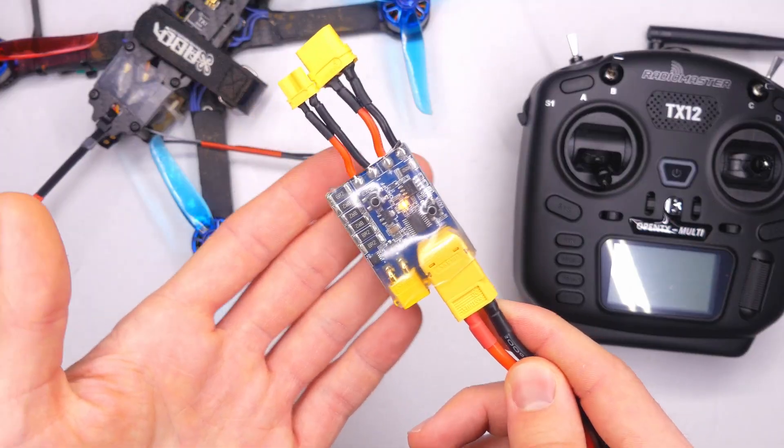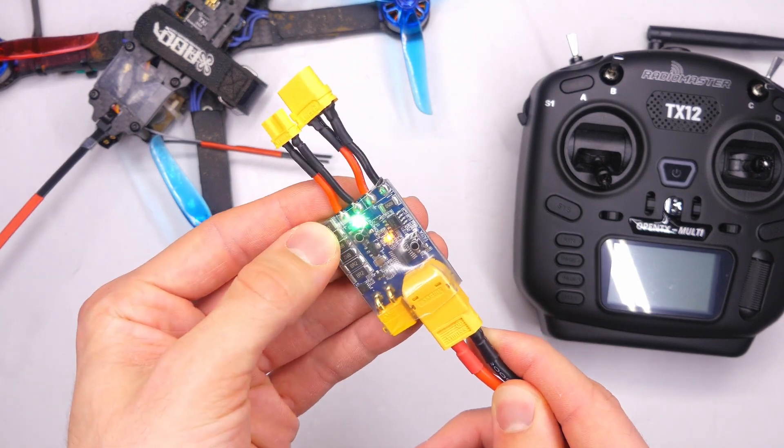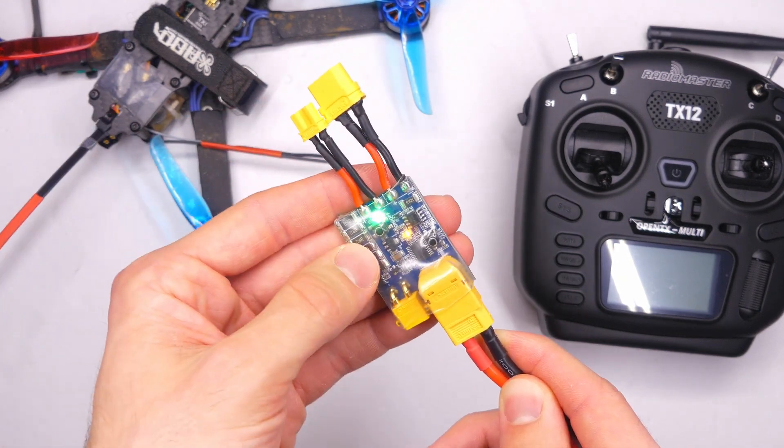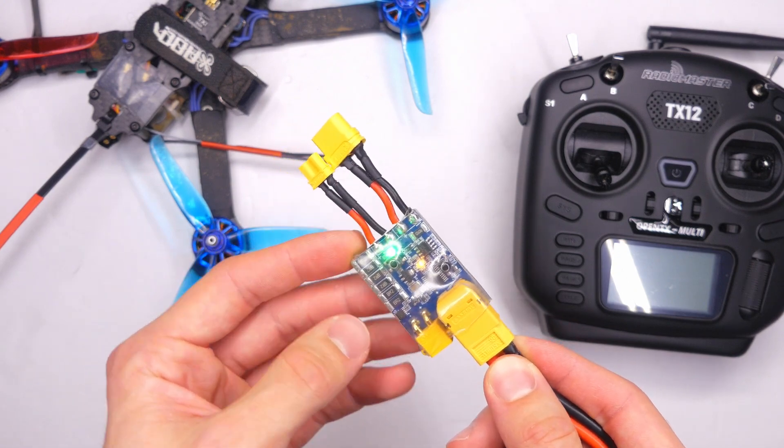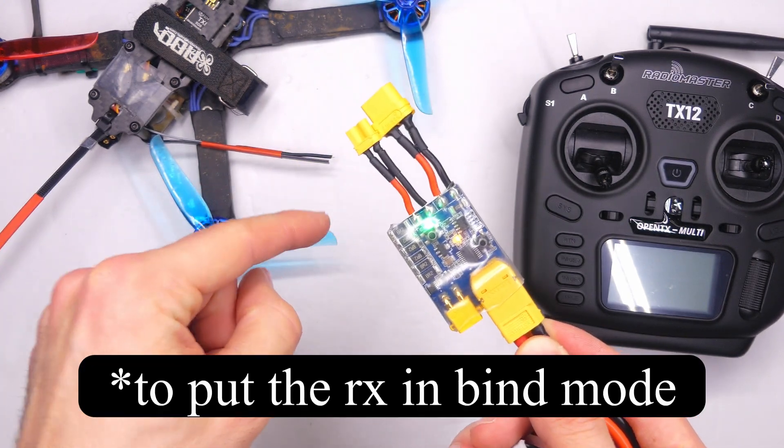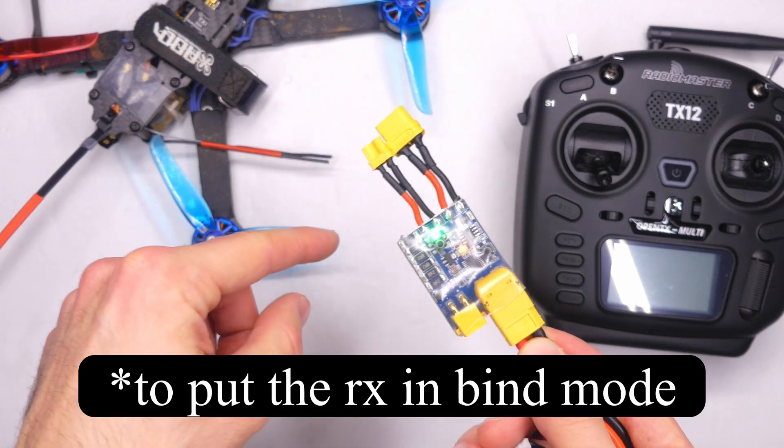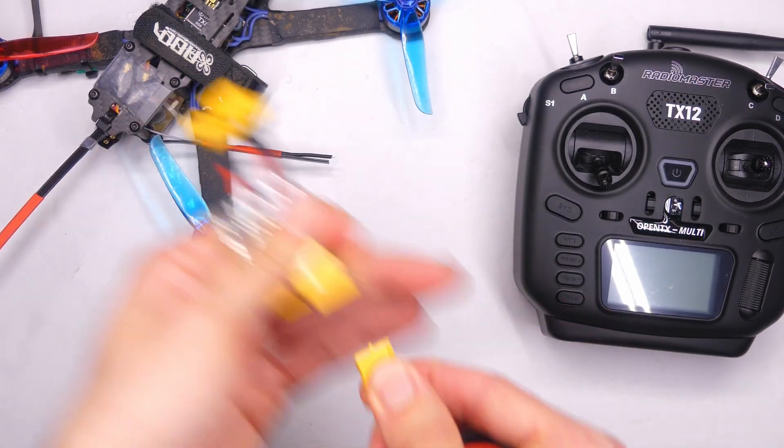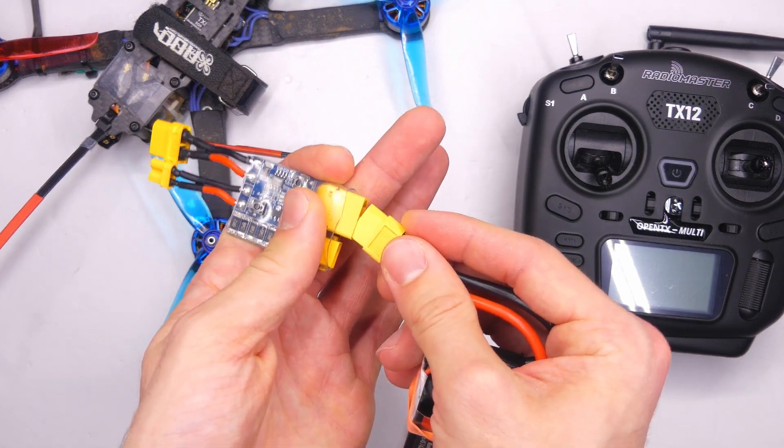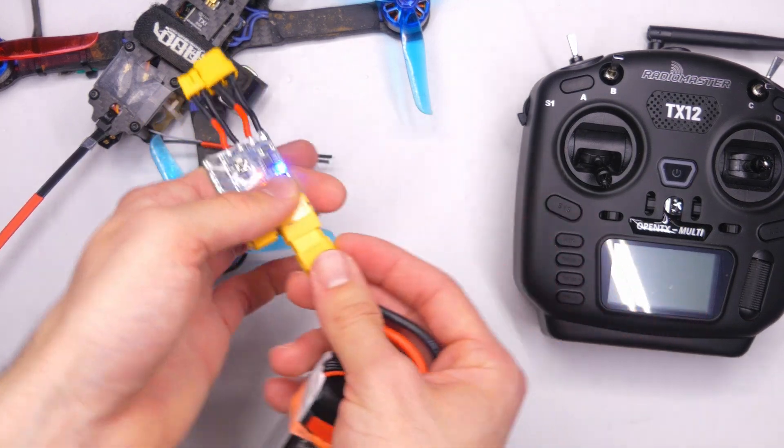Now, it might not seem like a big deal to be able to just press the button and turn on the power to the quad, but it's actually super helpful, because with a lot of receivers, what you'll have to do is press a button on the receiver and supply power to the quadcopter at the same time. And it can be tricky to do that if you have to actually plug in the XT60 to the quadcopter and press something down.